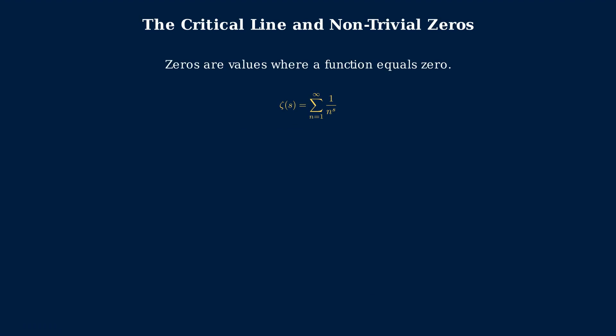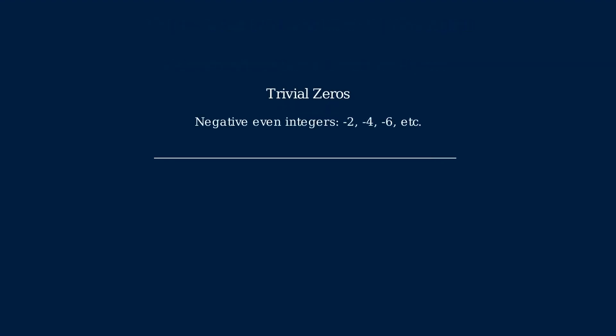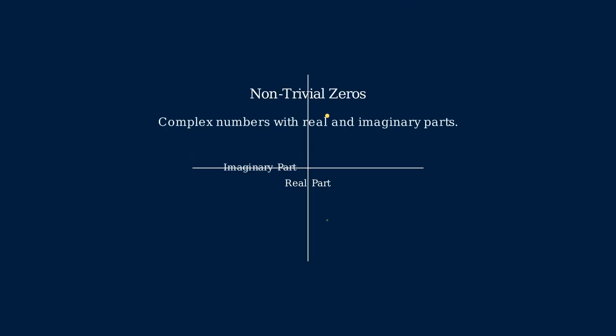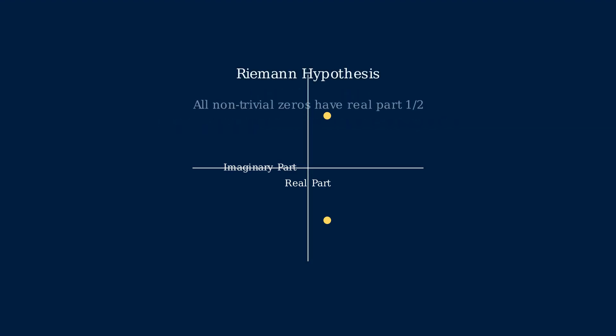For the Riemann zeta function, these zeros reveal profound patterns in prime numbers. The zeta function has trivial zeros at negative even integers. These are predictable and less mysterious. The non-trivial zeros are more complex. They appear as points in the complex plane, with both real and imaginary components. The Riemann hypothesis states that all non-trivial zeros lie on a vertical line in the complex plane, called the critical line, where the real part equals exactly one-half.